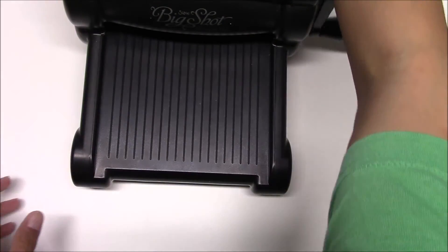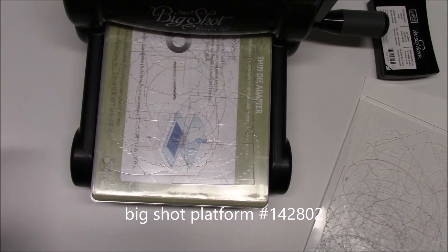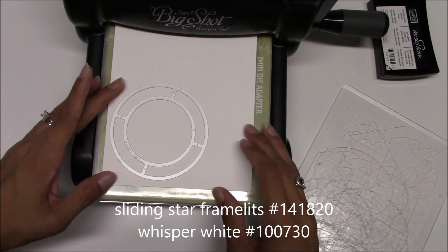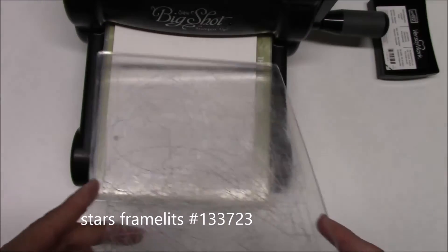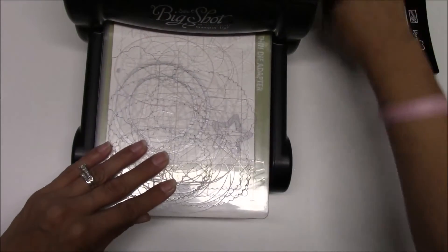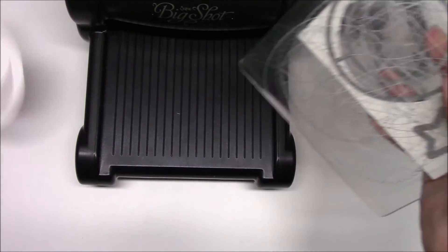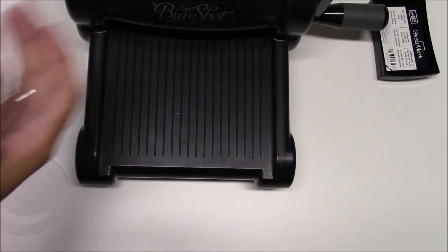Next we're going to bring in the Big Shot. I'm using the new adapter for the Big Shot. From the Sliding Star framelits, we're going to use the circle. And then we're also going to need a star. From the star framelit, I'm just using the smallest one. I'm going to make my sandwich and run it through. And that is all that we are using the Big Shot for.